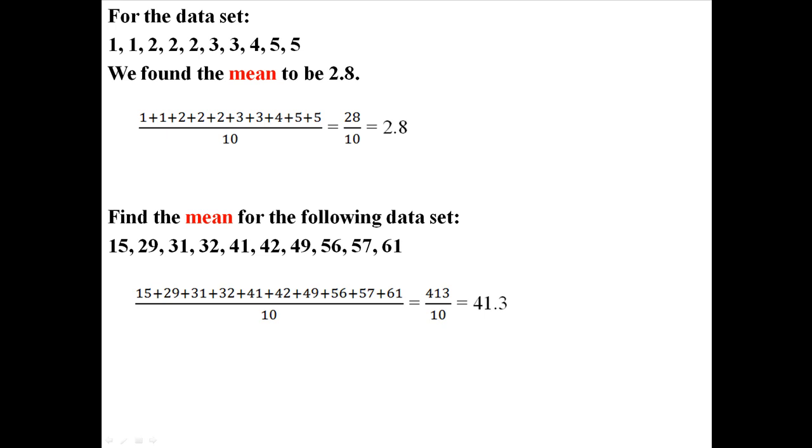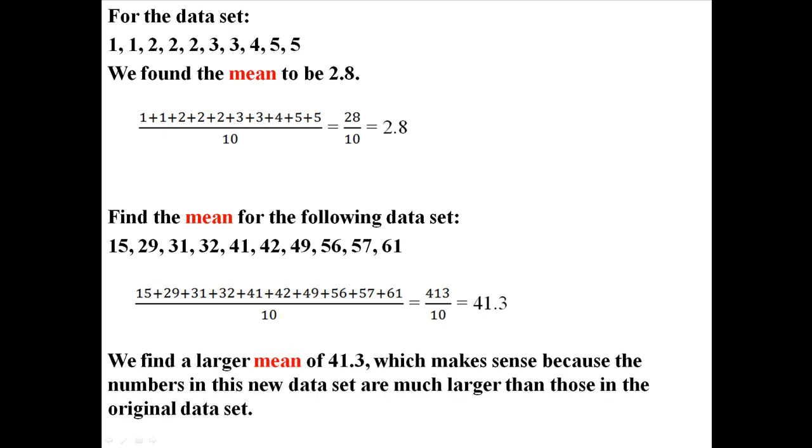We add everything together, divide by 10, and find a mean of 41.3. This larger mean makes sense because the numbers in this new data set are much larger than those in the original set.